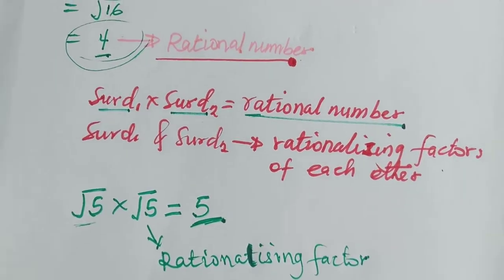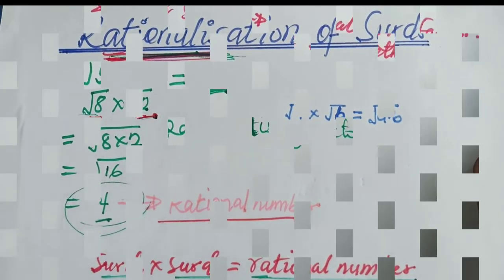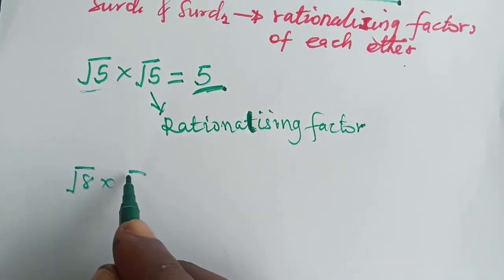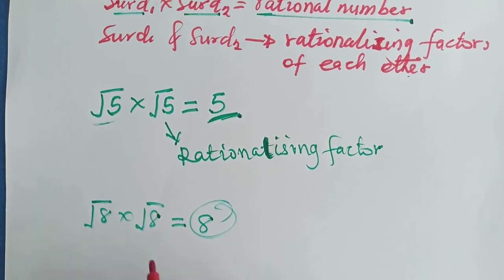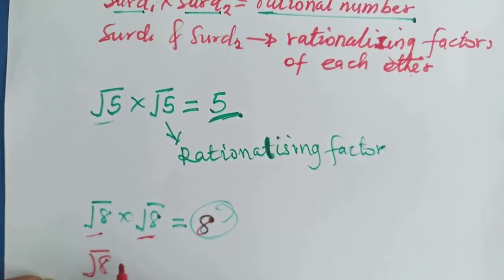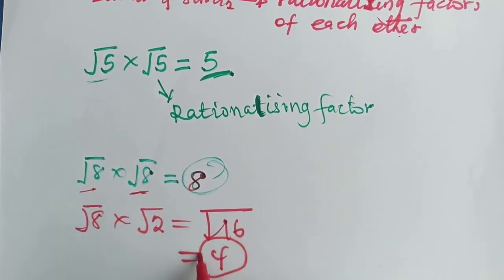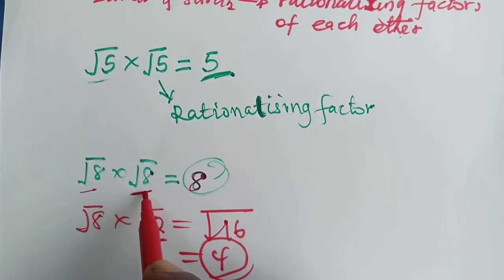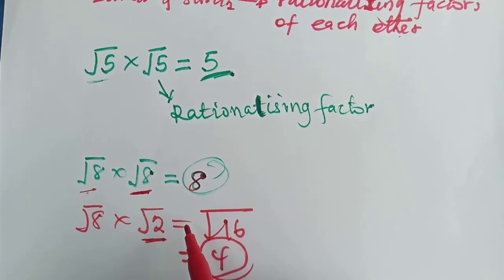But let's look at something. We had root 8, and we multiplied it with root 2 to get a rational number. But what if we multiply root 8 by itself — root 8 times root 8 gives me 8, which is also a rational number. So we can multiply root 8 by root 2 to get square root of 16, which equals 4 — also a rational number. This tells you that the rationalizing factor of a surd is not unique.